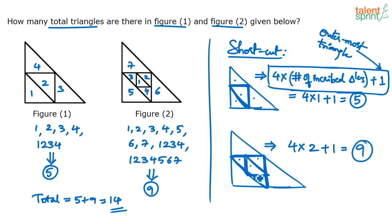If there were one more triangle inscribed inside, you'd do 4 × 3 + 1. Just remember the formula: 4 into the number of inscribed triangles plus 1. So for this question, 5 and 9 gives a total of 14 as the answer.